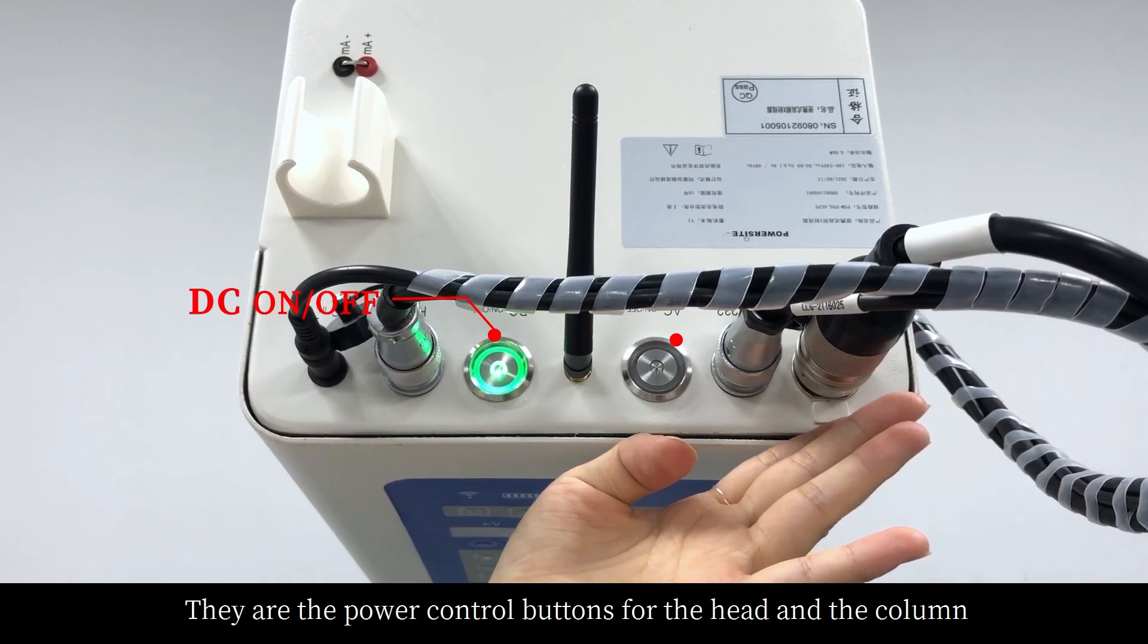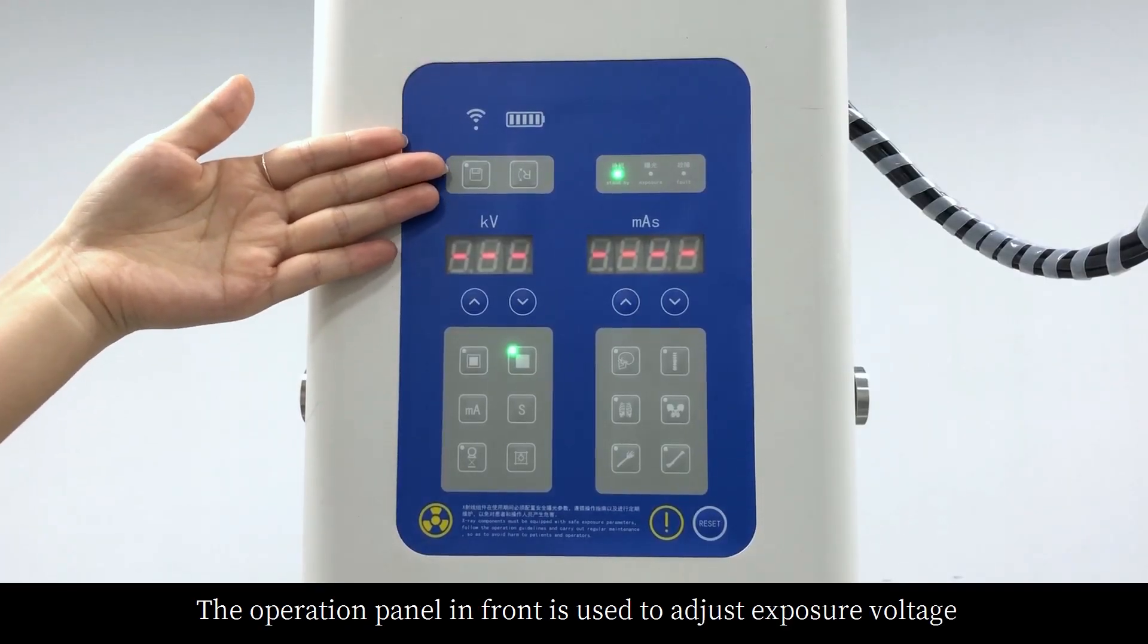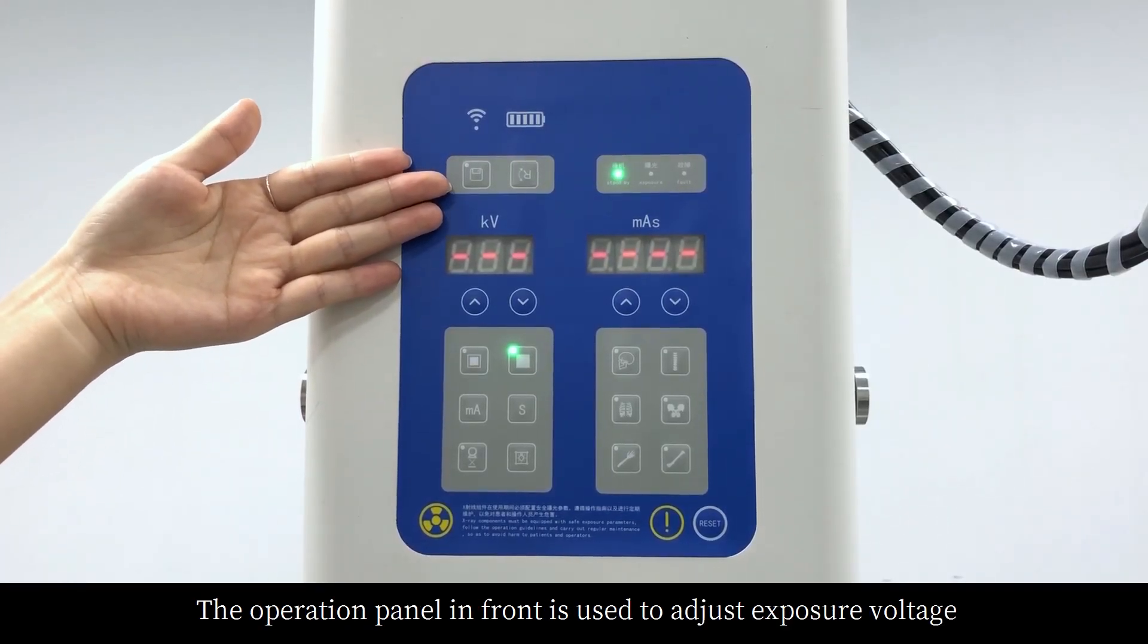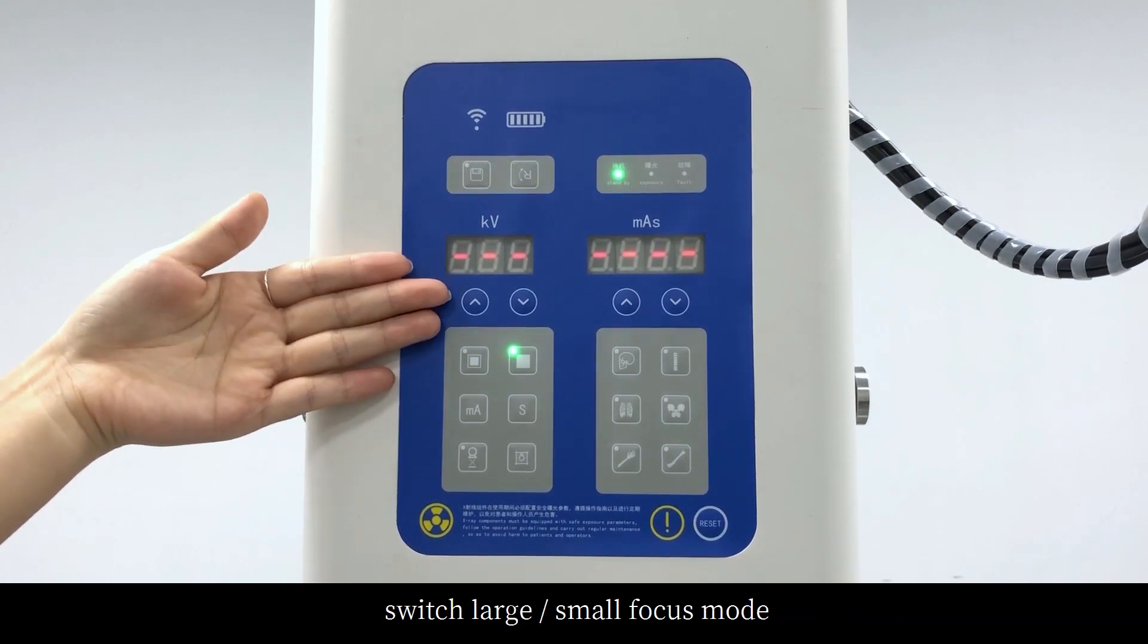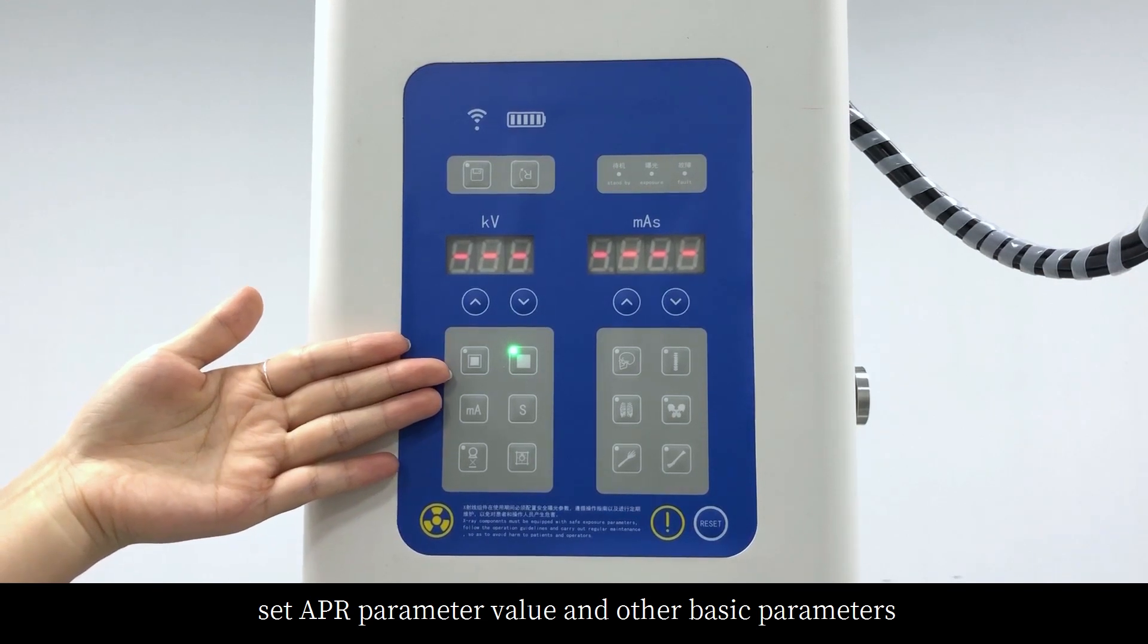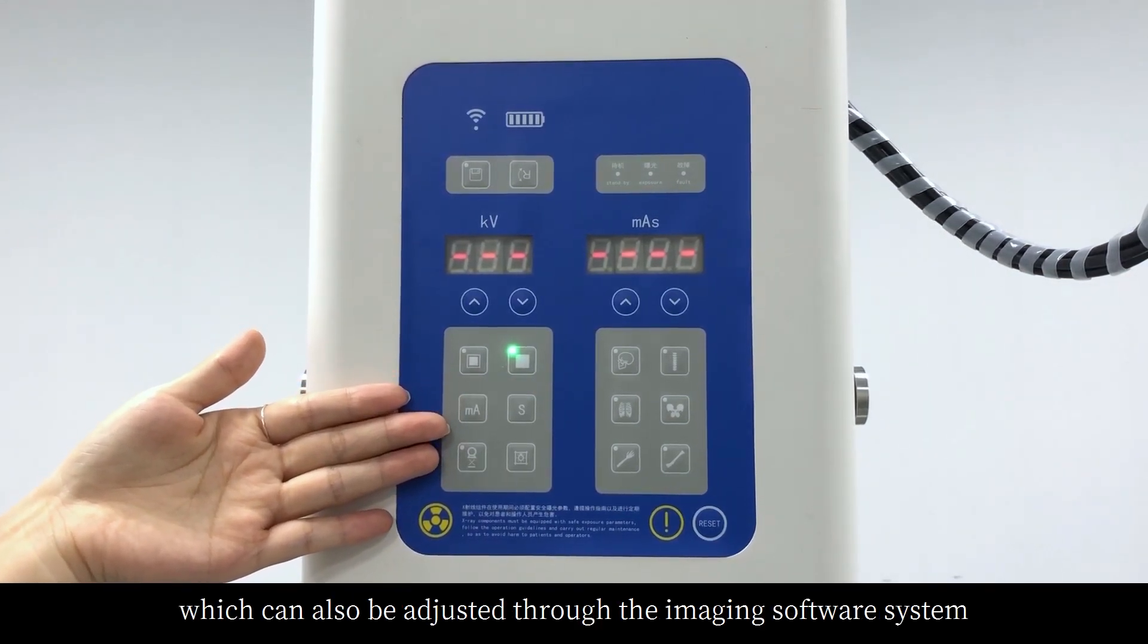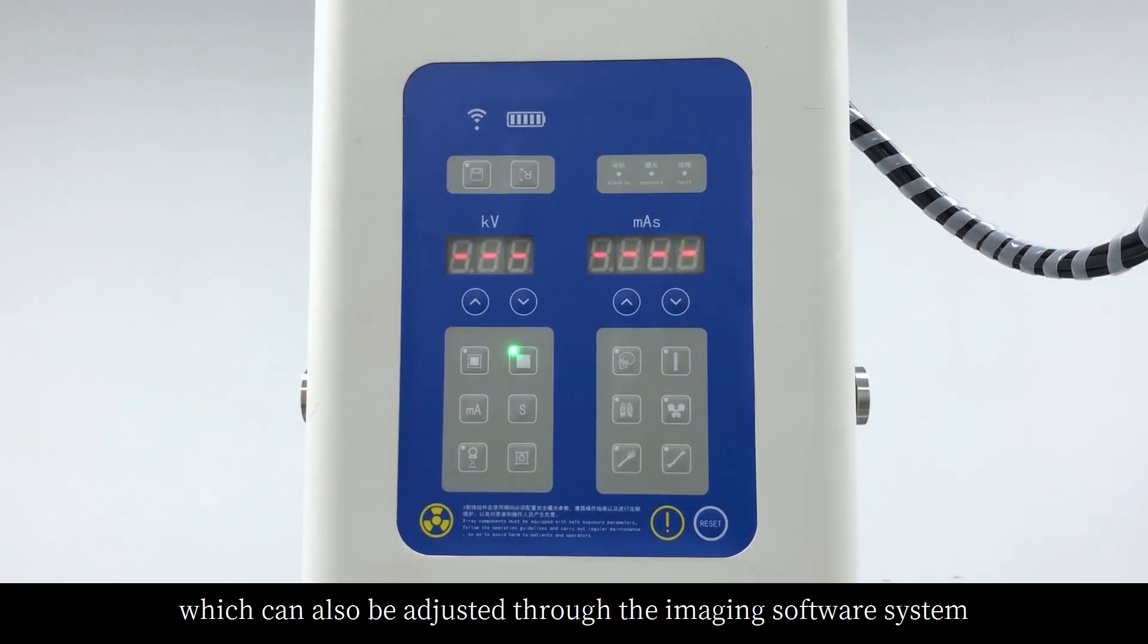They are the power control buttons for the head and the column. The operation panel in front is used to adjust exposure voltage, switch between large and small focus mode, set APR parameter value and other basic parameters, which can also be adjusted through the imaging software system.